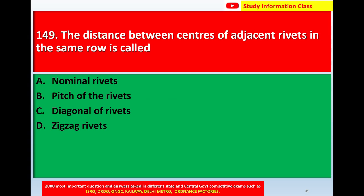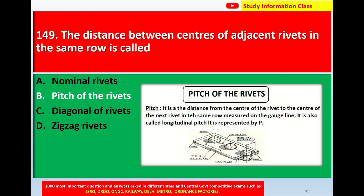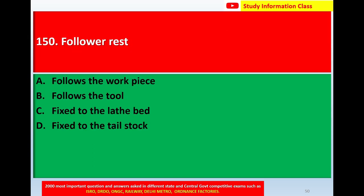For question number 148, the non-metallic tool material is Option B, ceramics. Question number 149: The distance between centers of adjacent rivets in the same row is called — Option A: nominal rivet, Option B: pitch of the rivets, Option C: diagonal of rivets, Option D: zigzag rivets. The correct answer is pitch of the rivets. It is the distance from the center of one rivet to the center of the next rivet in the same row, measured on the gauge line — also called longitudinal pitch, represented by P.